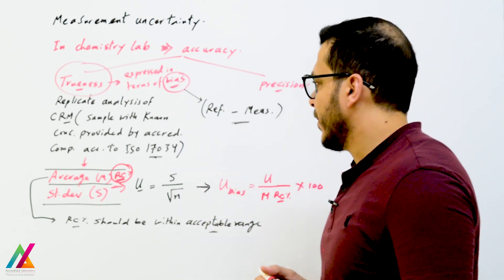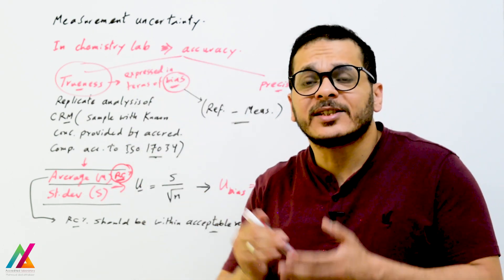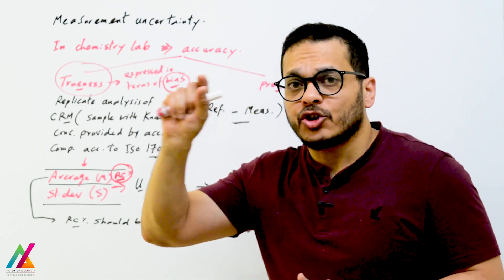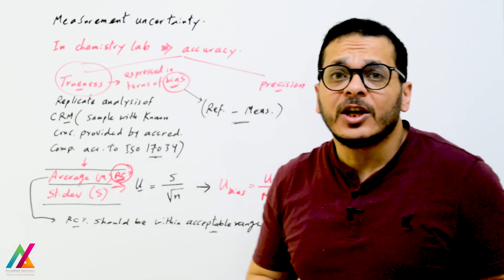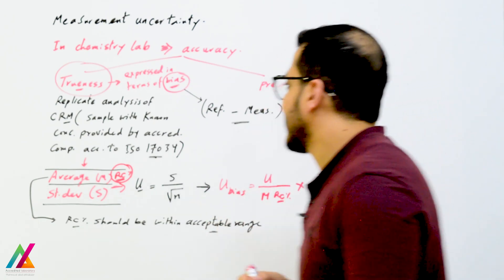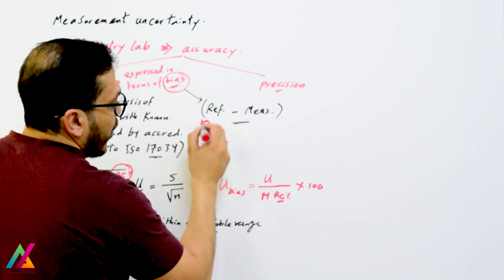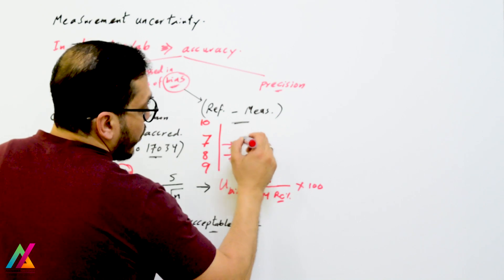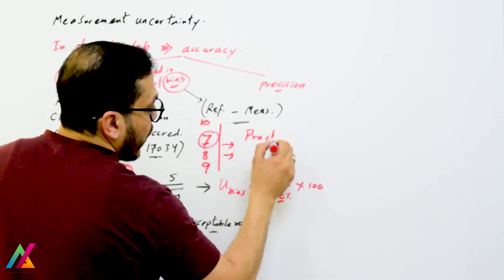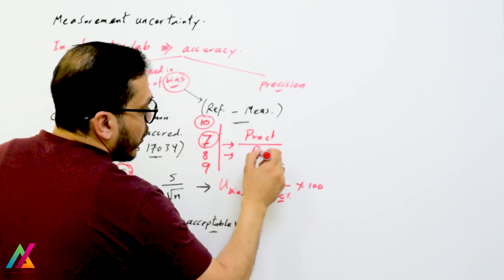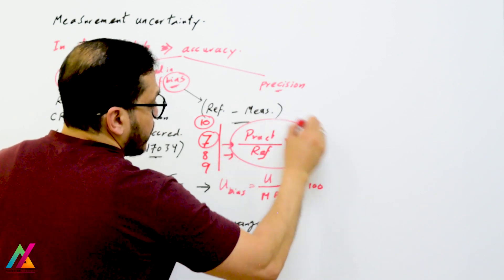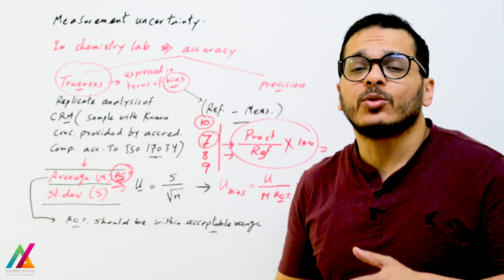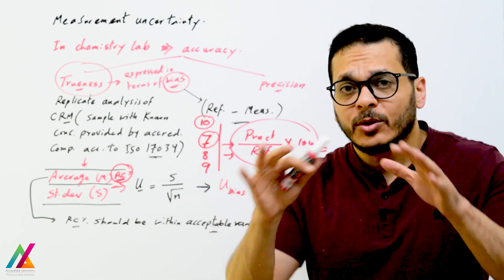You make 6 to 10 replicates of the certified reference material and calculate recovery for each individual result. Recovery must be within an acceptable range. Recovery is calculated as the measured value divided by the reference value multiplied by 100. It should fall within the acceptable range specified by the guideline used — for example, the Eurachem guideline requires 70% to 120%.